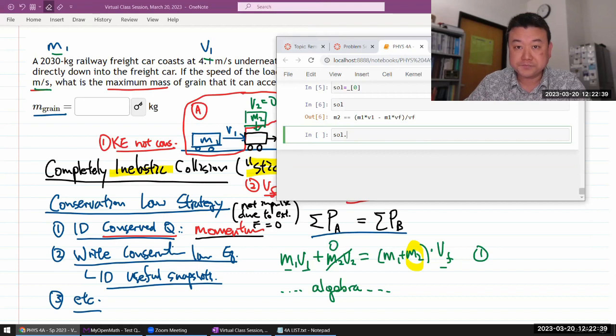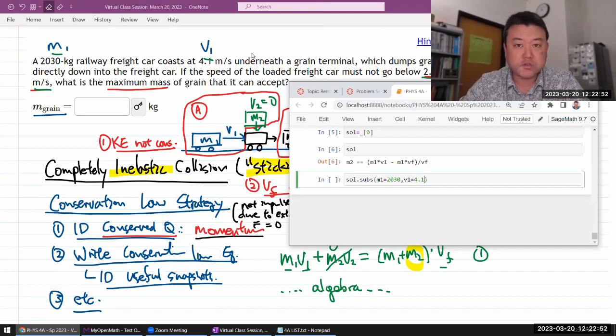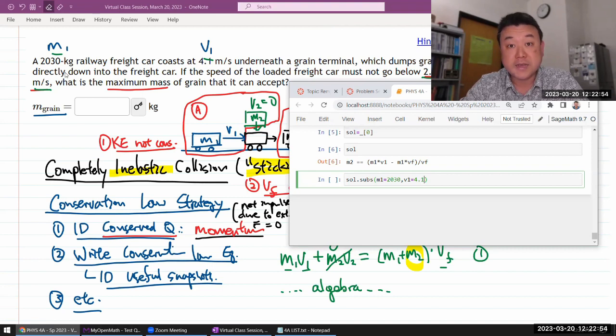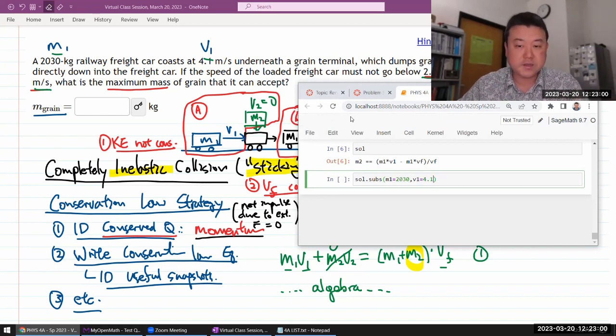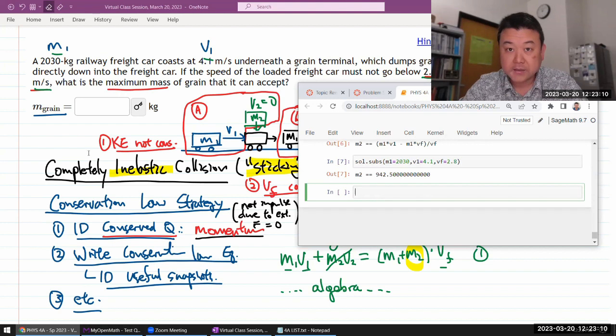So for the number that I will plug in into the system to check, let me just type in the numbers I'm given. So I'm using the substitution syntax, say M1 is 2030 kilogram, V1 is 4.1 meter per second, and I'm reviewing the units and making sure they are in basic SI units. If not, I need to make some argument to how, if I need to do any conversions and whatnot. V-final is 2.8 meter per second, also in basic SI units. All right, that all looks good. So when I plug that in, I get M2, the maximum acceptable mass is 942.5 kilograms. Okay.